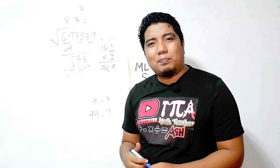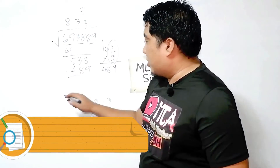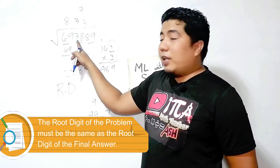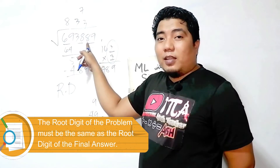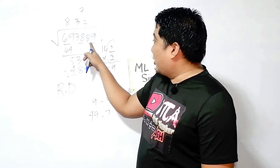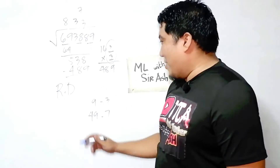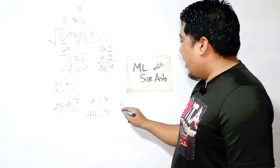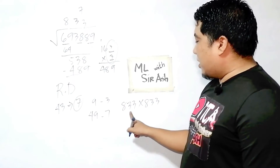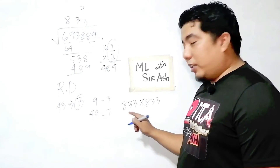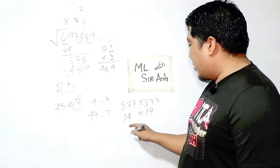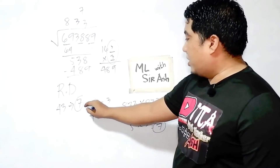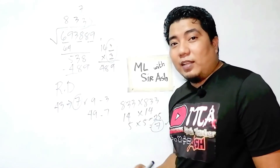The next step is to get the root digit — the sum of all the digits. 6 plus 9 is 15, plus 3 is 18, plus 8 is 26, plus 8 is 34, plus 9 is 43. Then 4 plus 3 is 7. The root digit is 7. Now let's try 833: 8 plus 3 is 11, plus 3 is 14. So 14 times 14: 1 plus 4 is 5, and 5 times 5 is 25, and 2 plus 5 is 7. The root digit matches — it satisfies 833.